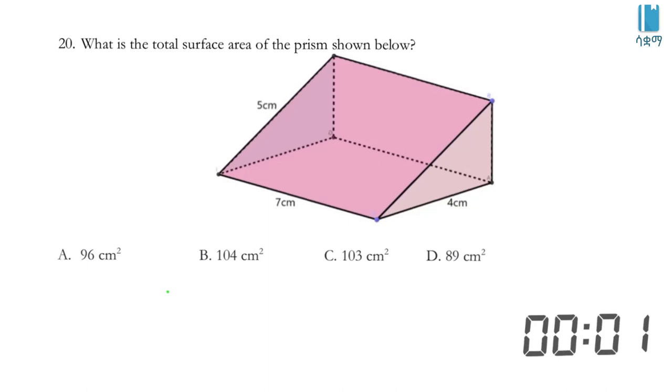Looking at the triangle, the slant height is 5 centimeters, one side is 4 cm. Using the Pythagorean theorem to find the missing side x: 5² = 4² + x². So 25 = 16 + x², which gives x² = 9, therefore x = 3 centimeters.